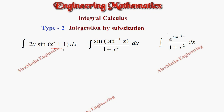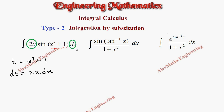Usually we take the inner function as the substitution, so we let t = x² + 1. We find dt, which is the differentiation of x² + 1, giving us 2x dx. We find the term 2x dx in the question, so it can be replaced by dt.